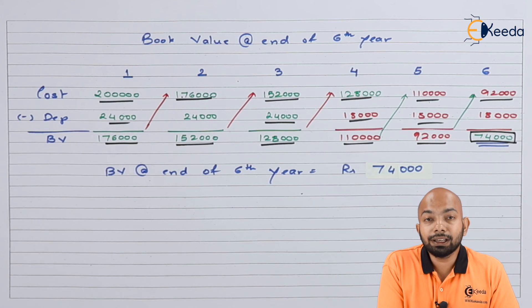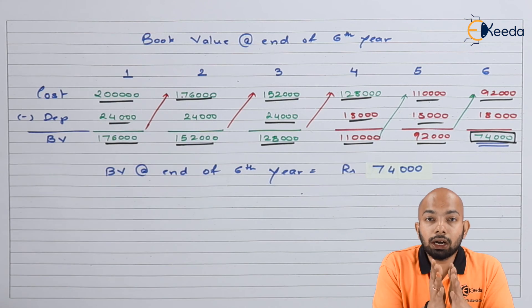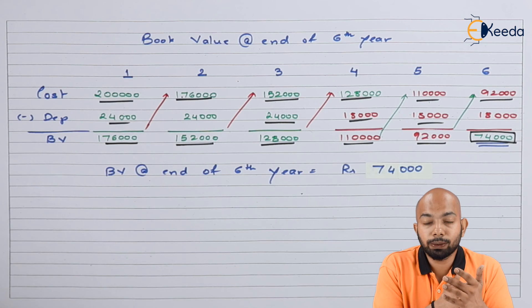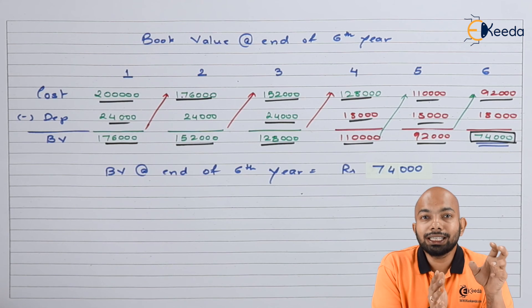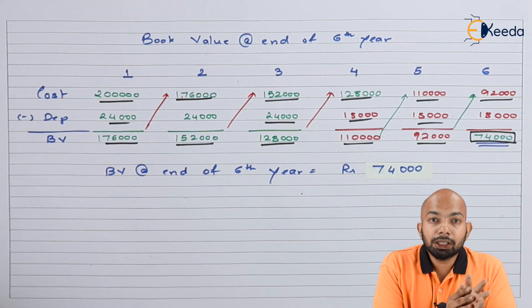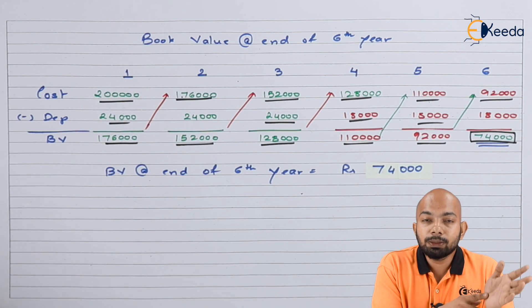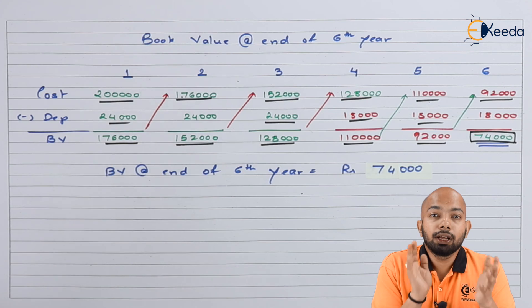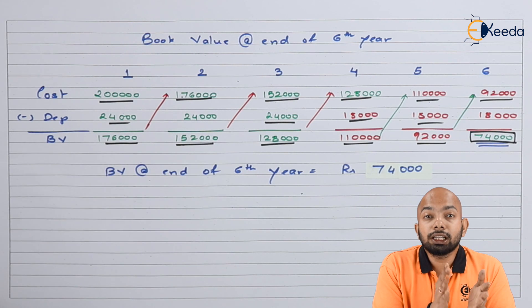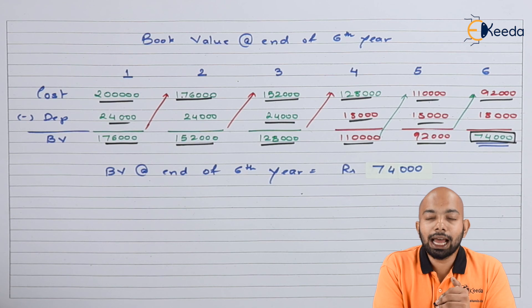This is the book value of that specific machine at the end of the sixth year. I hope this video gave clarity on how to use depreciation for this method. The only difference between the machine hour rate method and the production unit method is that in the machine hour rate method we use hours worked divided by total hours for estimated life, while here we use production units for one year divided by total production of its estimated life. Everything else remains the same. Thank you for watching — stay tuned with eKeda and keep subscribing.